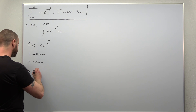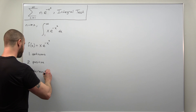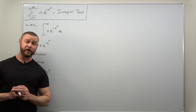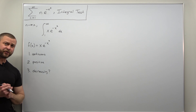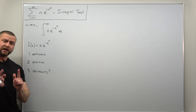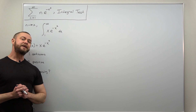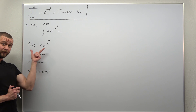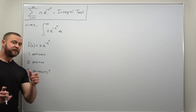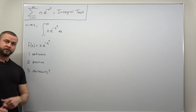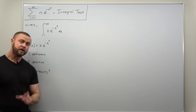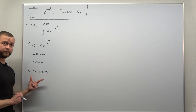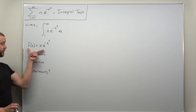What we need to check and verify — because it's certainly not obvious — is that this function is actually decreasing. To show that a function is decreasing on an interval, we use fundamentals from Calculus 1: we want to show that its first derivative is negative. So before we go any further, we need to verify the decreasing condition, and we'll do that by calculating the derivative.